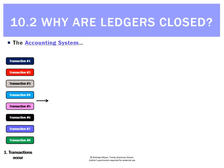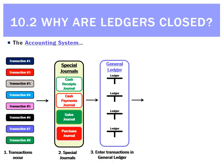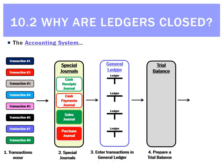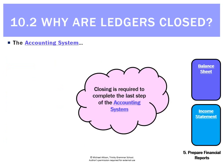The accounting system so far involves recording transactions into special journals, posting to the general ledger, making a trial balance, and then preparing a balance sheet and an income statement. Closing is required for that last step — we prepare an income statement by closing all revenues and expenses.